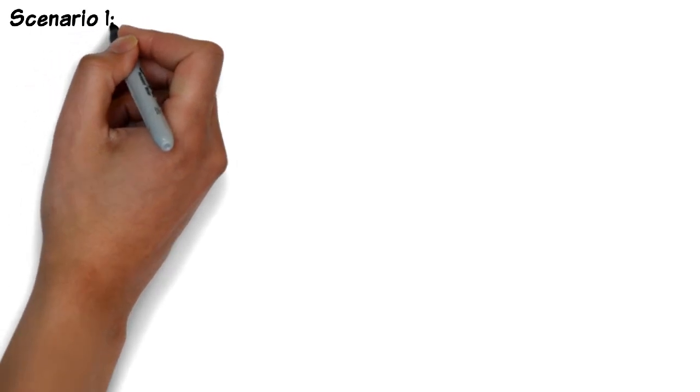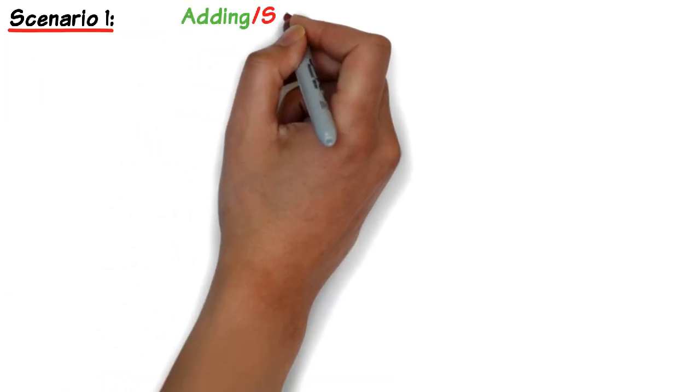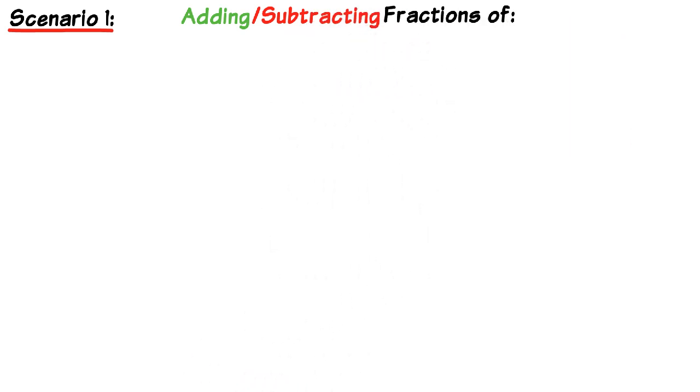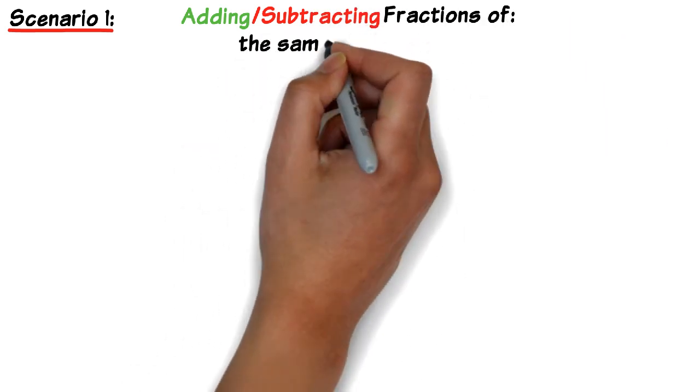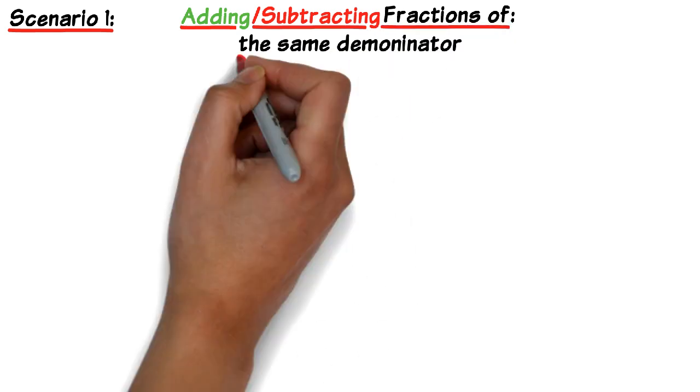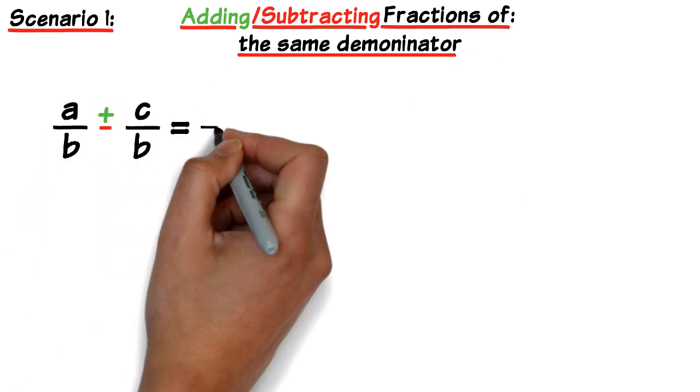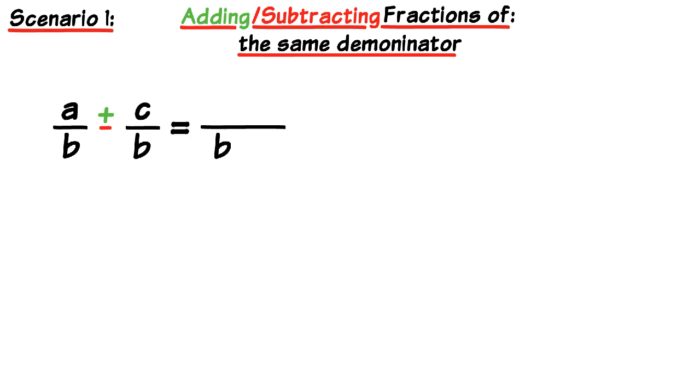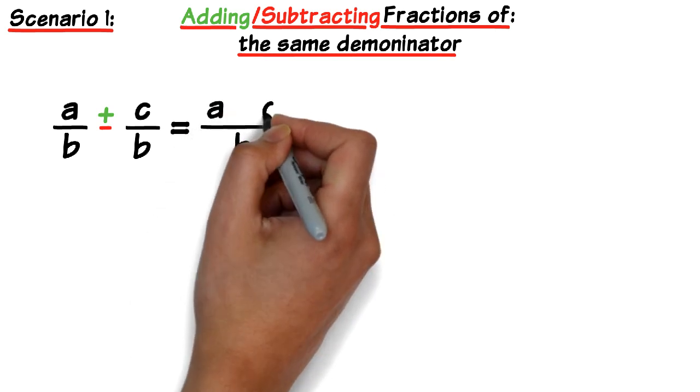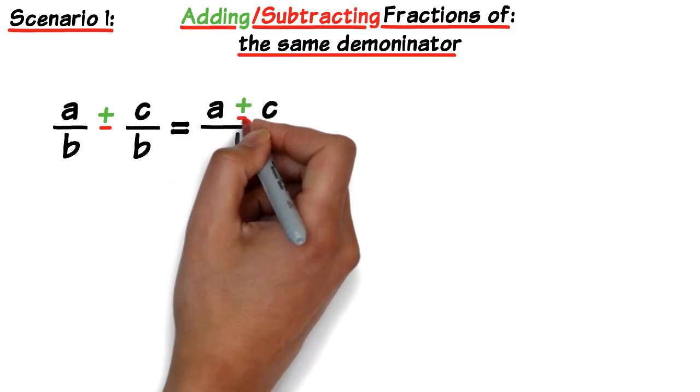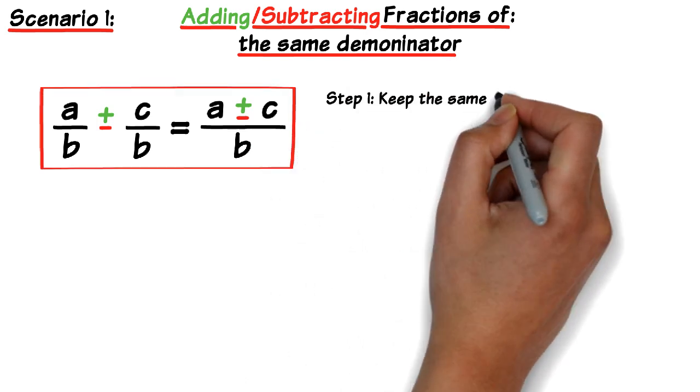Okay so there are two scenarios that we need to consider and we should always check to see which one of these exists. So the first scenario or the first case is when we have fractions of the same denominator. In this case it's really simple. We keep the denominator as it is. So the new denominator will be the original denominator. And the new numerator will just be either the addition or the subtraction of the two numerators.